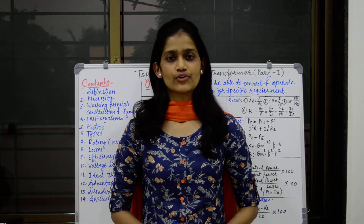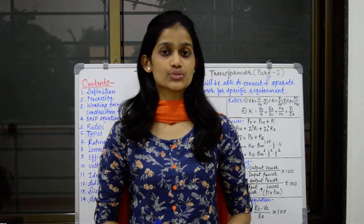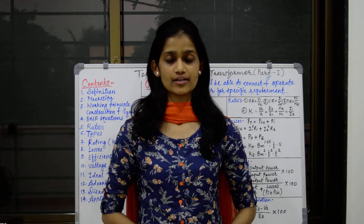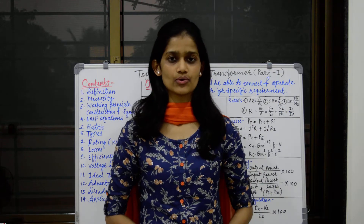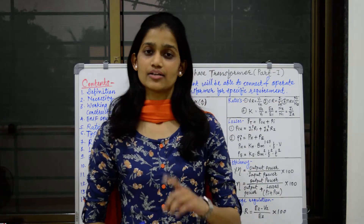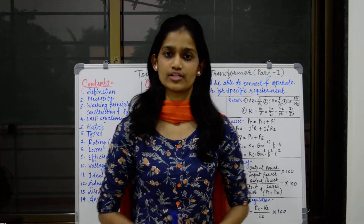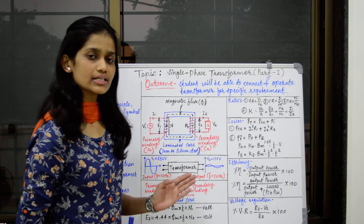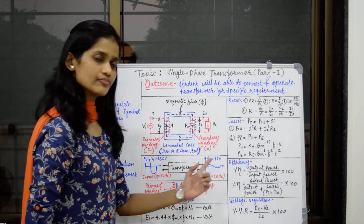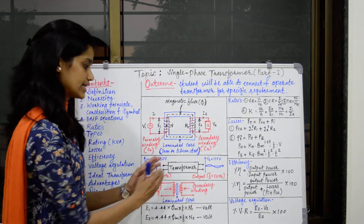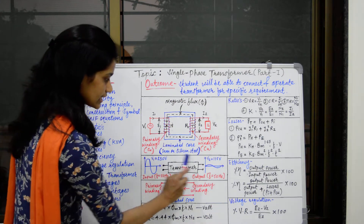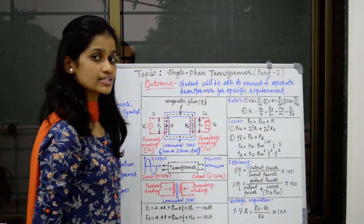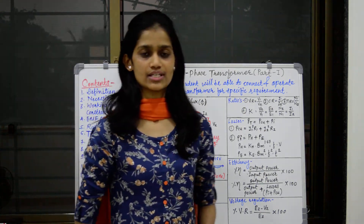Basically, a transformer is an electrical machine which is used to transfer electrical energy from one AC circuit to another AC circuit. It may increase or decrease the voltage and current level, but the frequency of supply must remain the same. For example, if we need to decrease the voltage level from 230 volts to 115 volts, we can use a transformer. Here, the voltage level is decreased but the frequency of input and output remains the same — that is 50 Hz, which is the standard frequency in India.